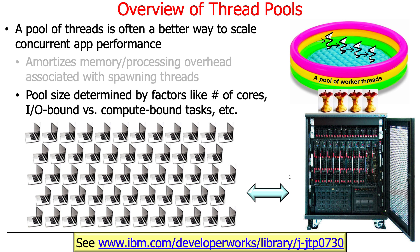That raises a question: how big should the pool size be? The pool size is determined by various factors, like how many cores you have, or whether your threads are I/O bound — sitting there reading and writing from disks or the network — or compute bound, crunching through analyses in memory. Those different factors have an impact on how many threads you ought to have in your pool. There's actually a formula we'll talk about later.